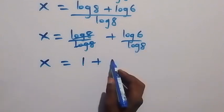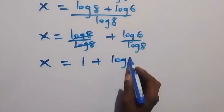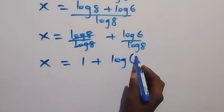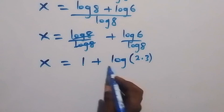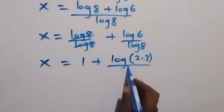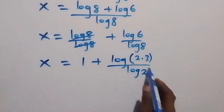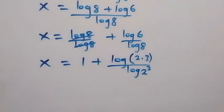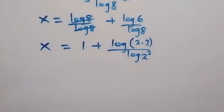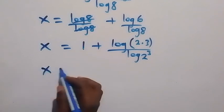We can write log 6 as log of 2 times 3, which is the same thing as 6. Then in the denominator, we can write log 8 as log of 2 raised to power 3, which is the same thing as 8, since 2 times 2 times 2 equals 8.